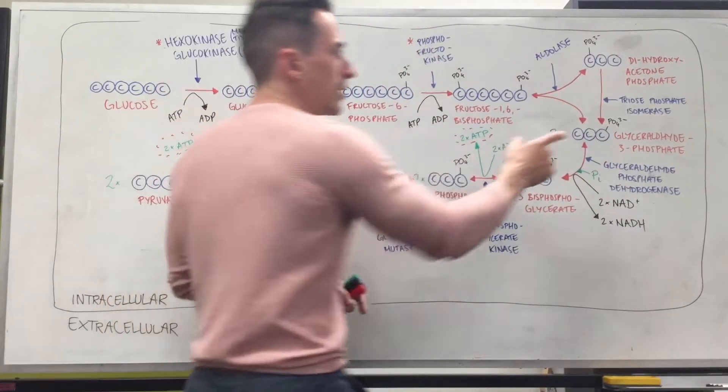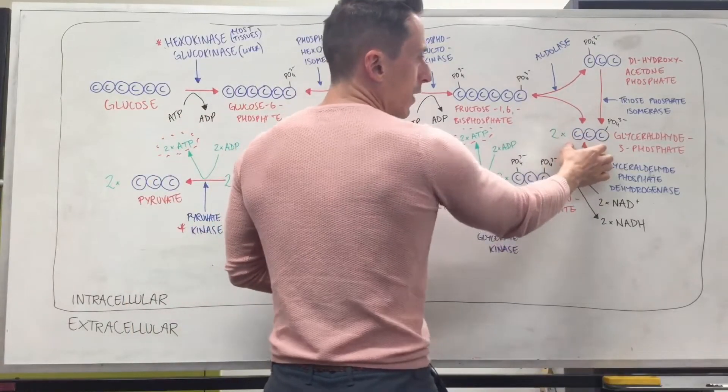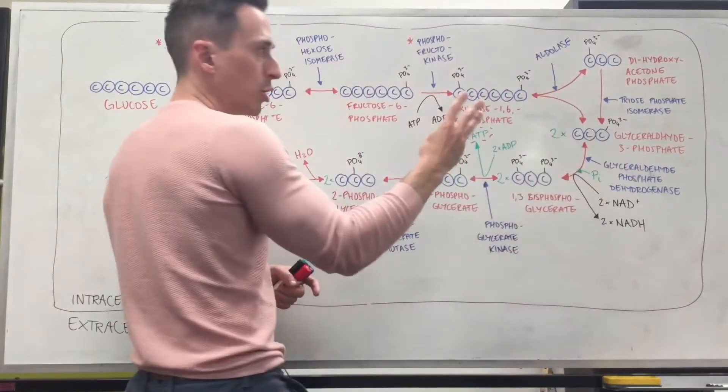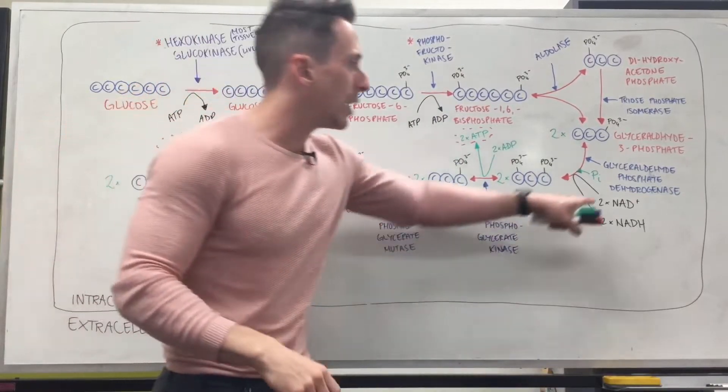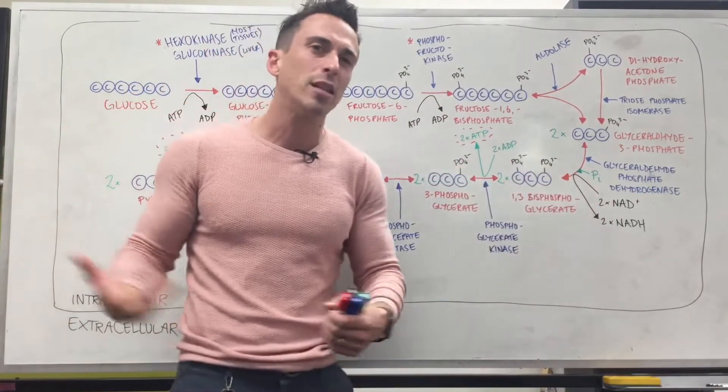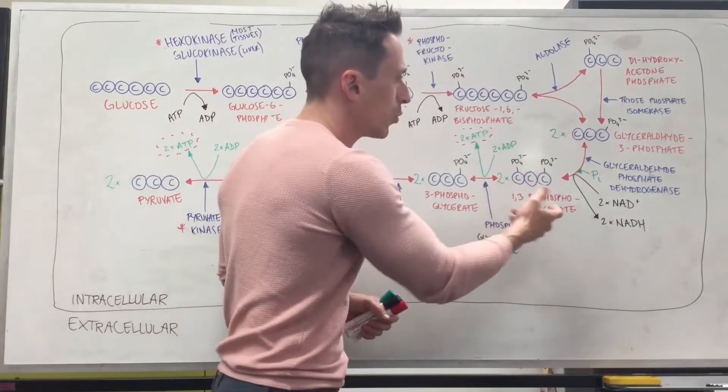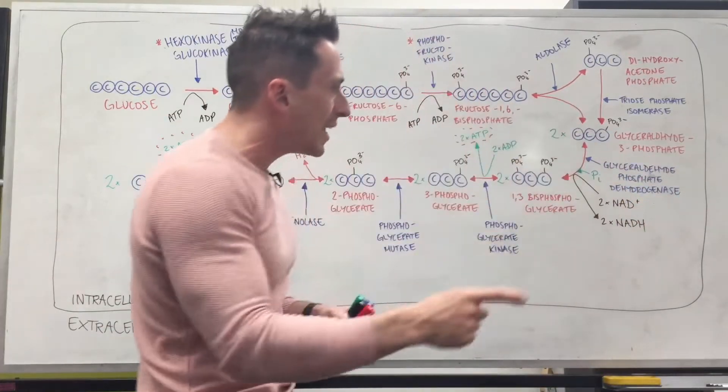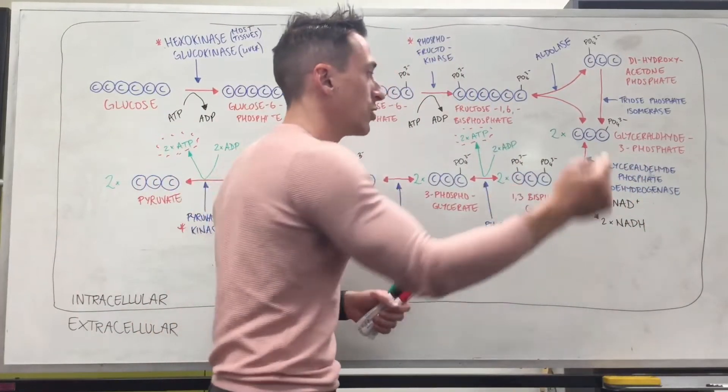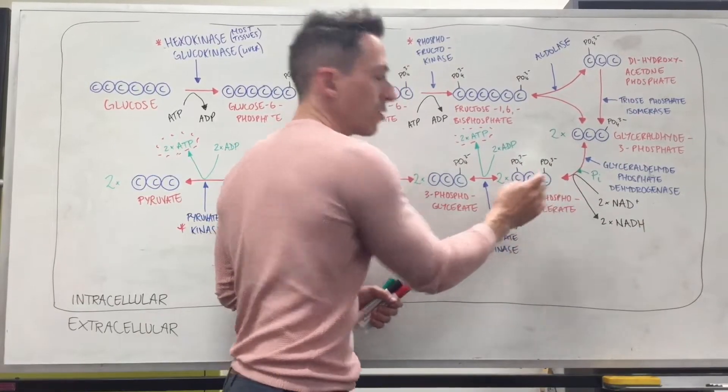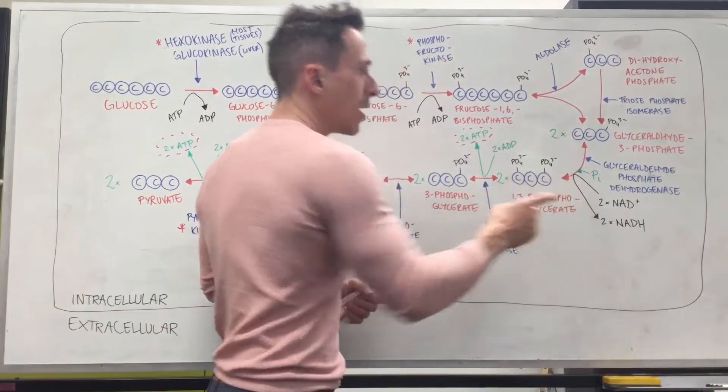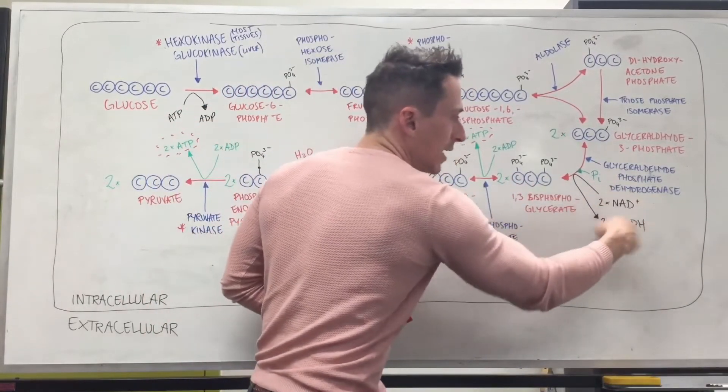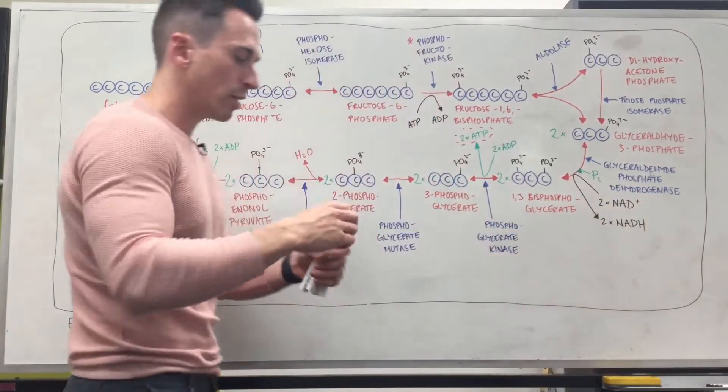Now this is where it gets a bit tricky. This glyceraldehyde 3-phosphate, remember it's got a phosphate on the third position, we want to give it another phosphate but we don't do it through ATP. We do it with an inorganic phosphate, a phosphate that's basically just laying around. We give it to it using this enzyme and so there you can see there's the phosphate now attached to the first carbon group and the third carbon group, so it's called 1,3-bisphosphoglycerate. But another thing happens here with NAD+ to NADH. So this is the thing.